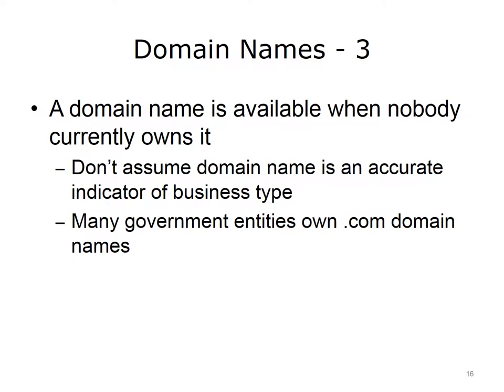Keep in mind that anyone can buy any available domain name with any extension, if a person or organization is willing to pay for it and if the domain name is available. A domain name is available when another person or entity does not currently own it. When an entity's address ends with .org or .gov or other extension, this does not prove that the entity actually is that type of organization. Therefore, without doing further research, could it be truthfully said that the White House of the United States of America owns www.whitehouse.gov? No — it would require more investigation to find out. Finally, government entities own a number of domain names with the .com extension.